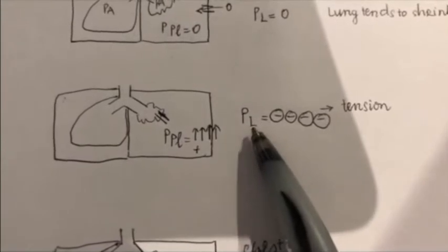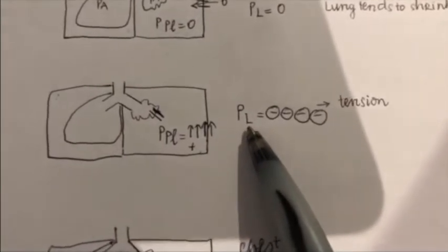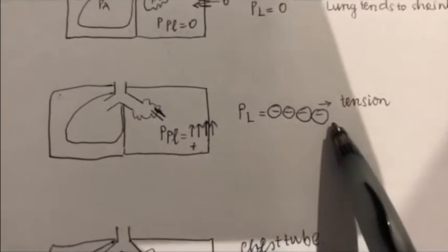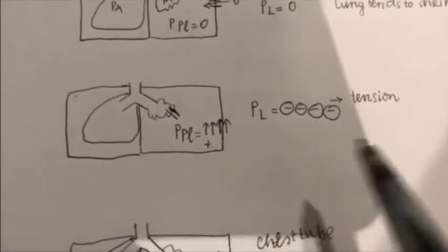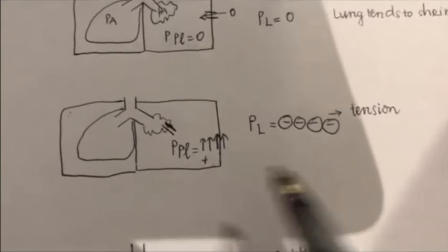And so in this case, the transpulmonary pressure will be super, super negative. The lung will shrink even a lot, lot more. So that is what happened in our patient here.